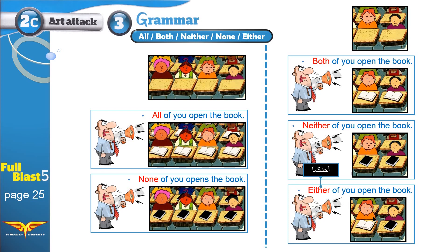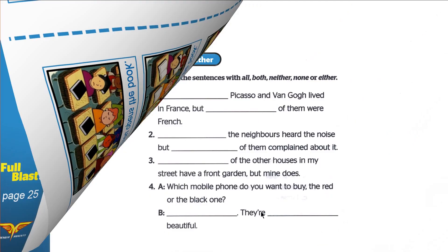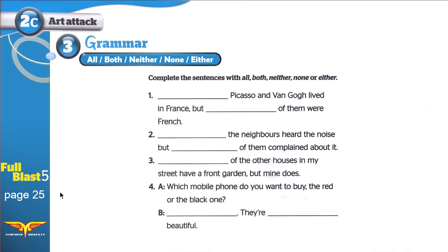I hope that this is clear. Now let's move on and work on the exercise on page 25. Complete the sentences with ALL, BOTH, NEITHER, NONE, or EITHER.